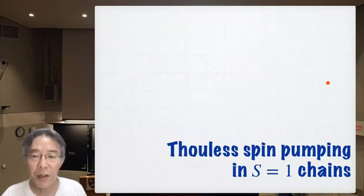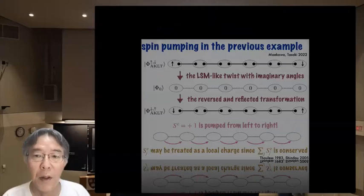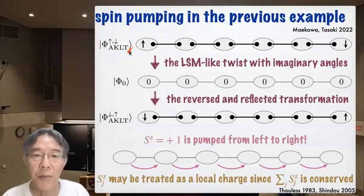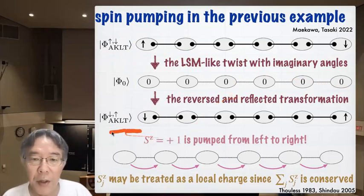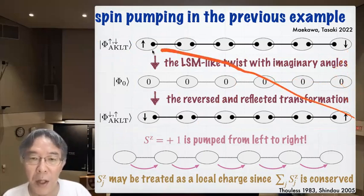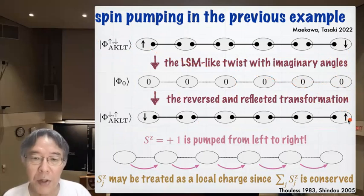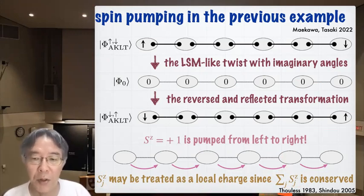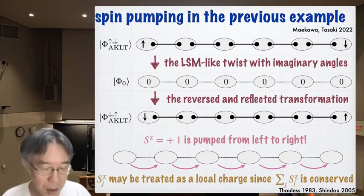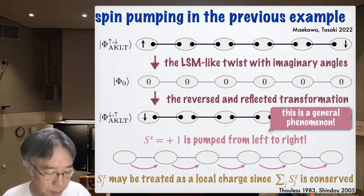The next topic is soulless spin pumping in spin-1 chains. The imaginary twist operator V_es transforms the AKLT ground state toward the |0⟩ state. Applying the reverse transformation with left and right reflected, one ends up back in the AKLT ground state but with a different edge state — S^z = +1 has been pumped from left to right. Since U(1) symmetry makes total S^z a conserved quantity, S^z_j is a local charge, and this corresponds precisely to the process known as Thouless charge pumping.